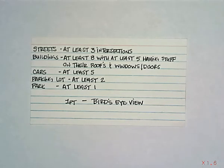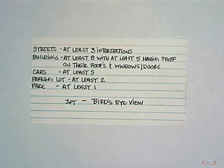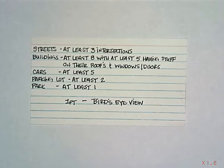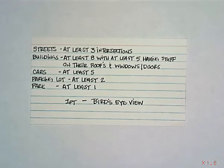Hello and welcome to the Happy Valley High School Art YouTube channel. You are watching a one-point perspective bird's-eye view. For this drawing you are required to have at least three intersections with four streets, eight buildings, with at least five of those buildings having something on their roof and windows or doors. On your streets you will need at least five cars, at least two parking lots, and at least one park. These requirements are linked in the description box.